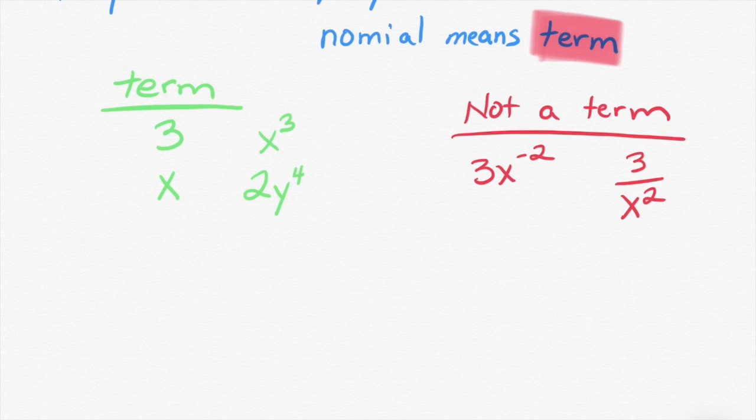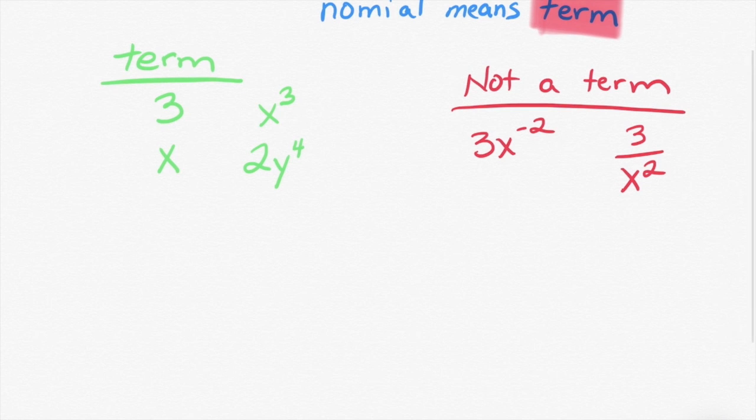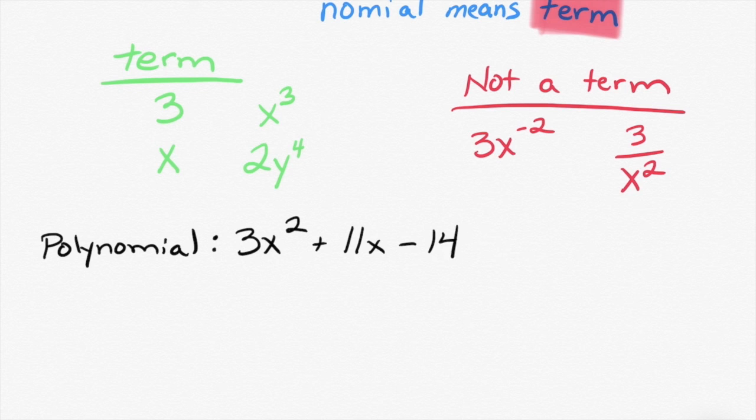So when I say a polynomial is more than one term, here's an example of a polynomial. There's an example of a polynomial. How many terms are there in this polynomial?